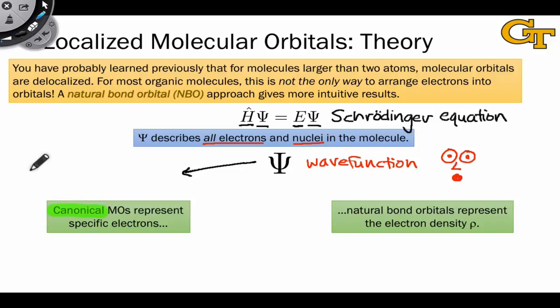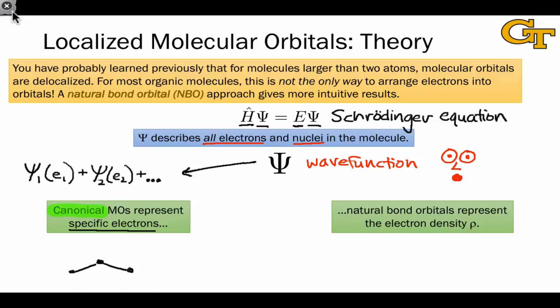And so we can take different approaches to express the wave function in terms of simpler functions that are scaled and added together. The primary way we do this is using the so-called canonical approach, where we break the overall molecular wave function down into molecular orbitals, and each molecular orbital corresponds to a specific electron. There's an orbital for electron 1, there's an orbital for electron 2, and so on and so forth. And more or less, the actual math of this is somewhat more complicated, but more or less, we add up these molecular orbital wave functions to give the overall molecular wave function. The important point here is that the canonical MOs represent specific electrons, and since specific electrons can theoretically wander over the entire molecule, these end up delocalized.